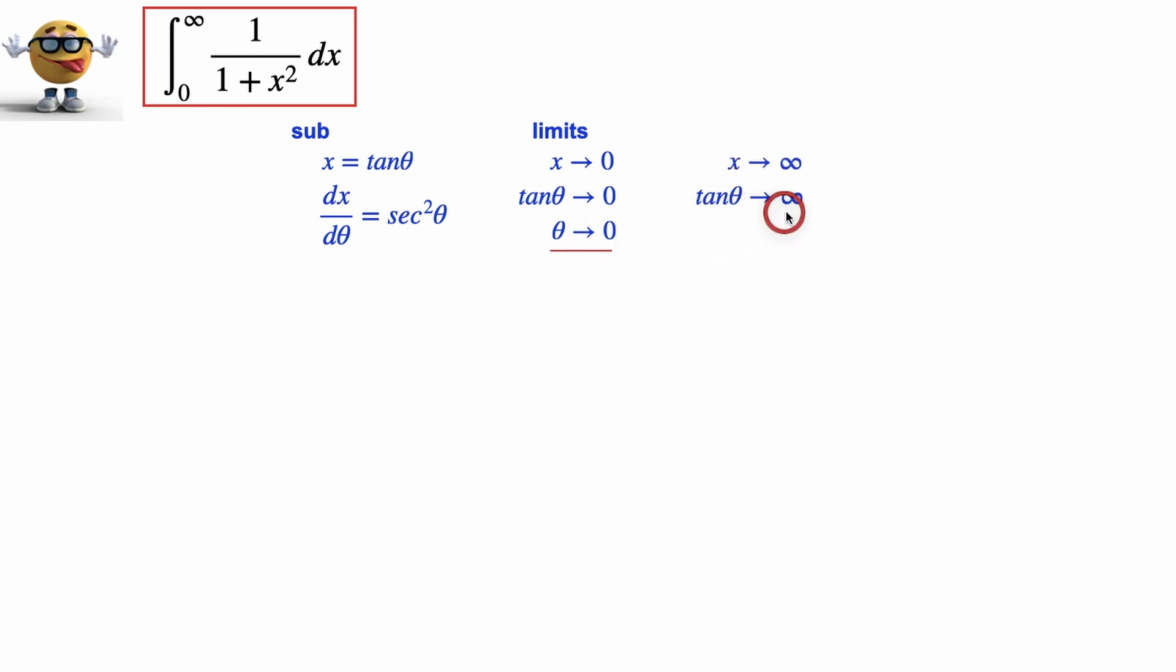Now for the other one, tan theta has to go to infinity. Now what about theta? Well tan theta is sine over cos, right? And sine is 1 at pi over 2. Cosine is 0 at pi over 2.